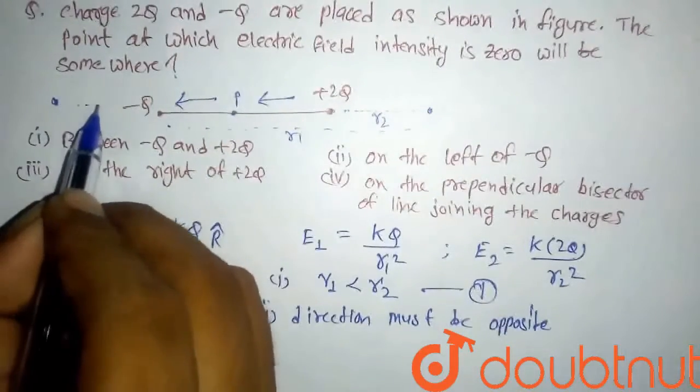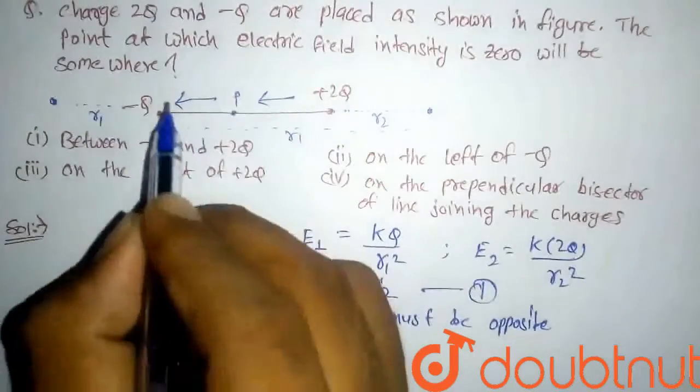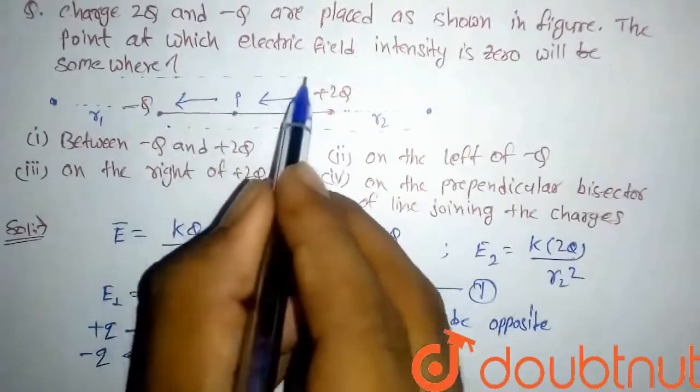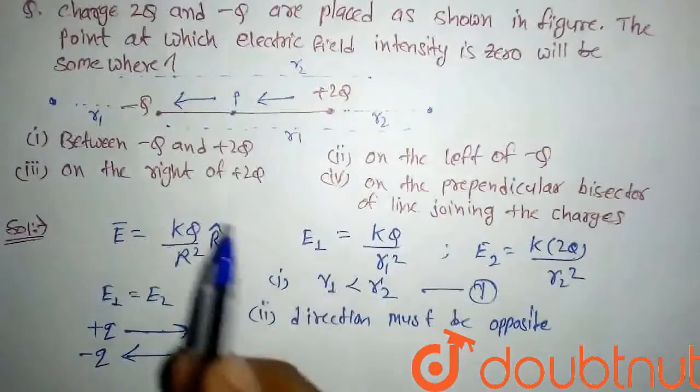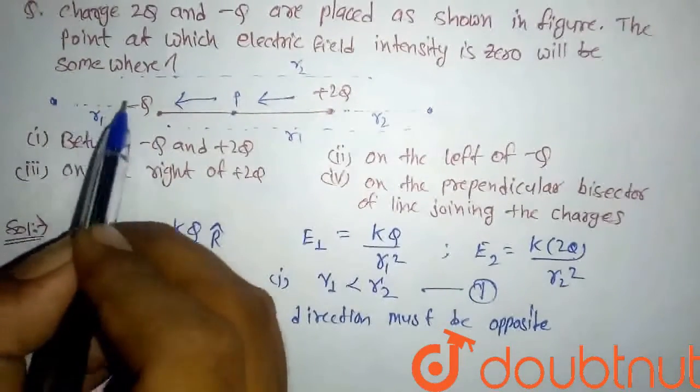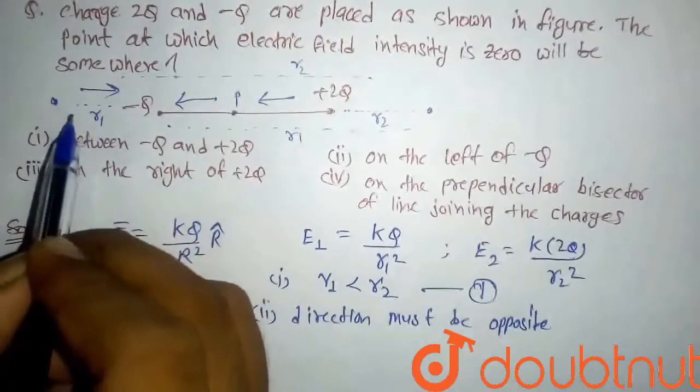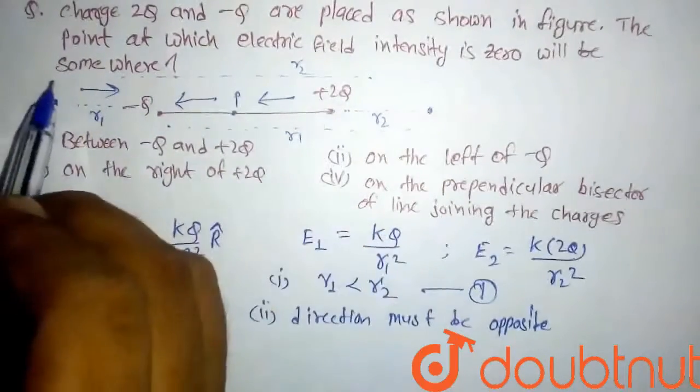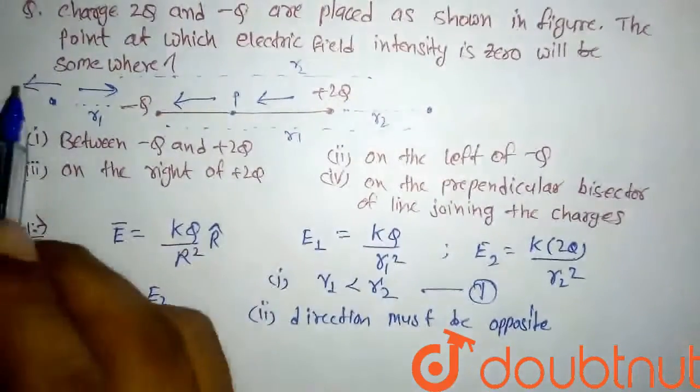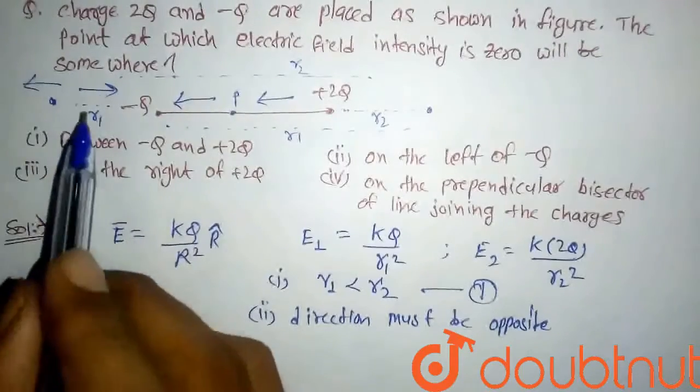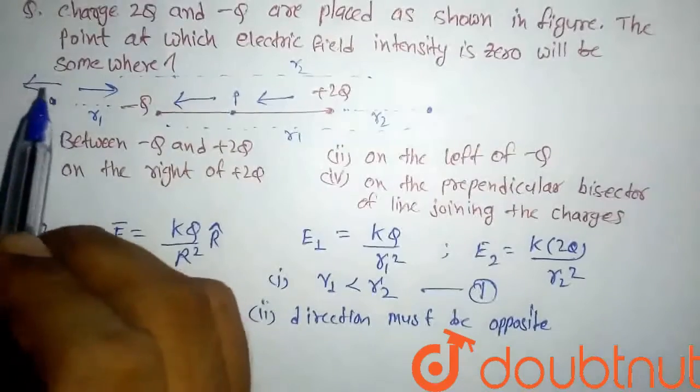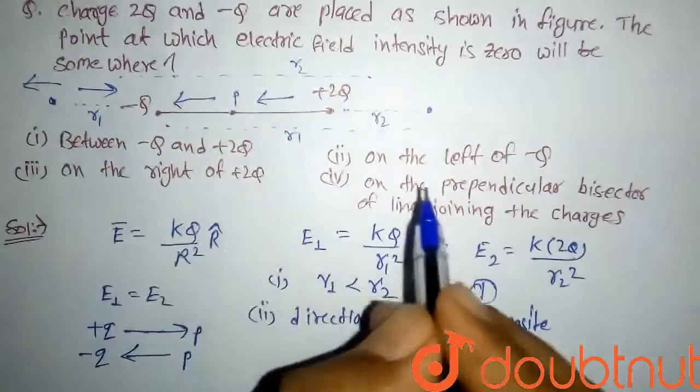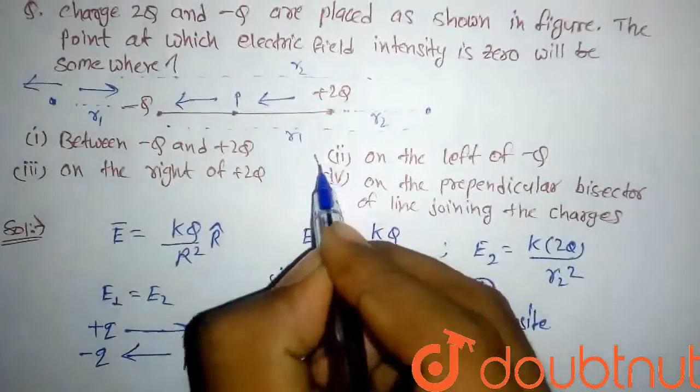If we take any point here on the left, then this will be r₁ and this point will be r₂. Here this condition is satisfying, and direction is opposite because due to -2Q direction will be in this direction and due to +2Q direction will be in this direction. So here direction is opposite and r₁ is less than r₂, so here electric field can be zero. So here our option will be on the left of -2Q. This will be our answer.